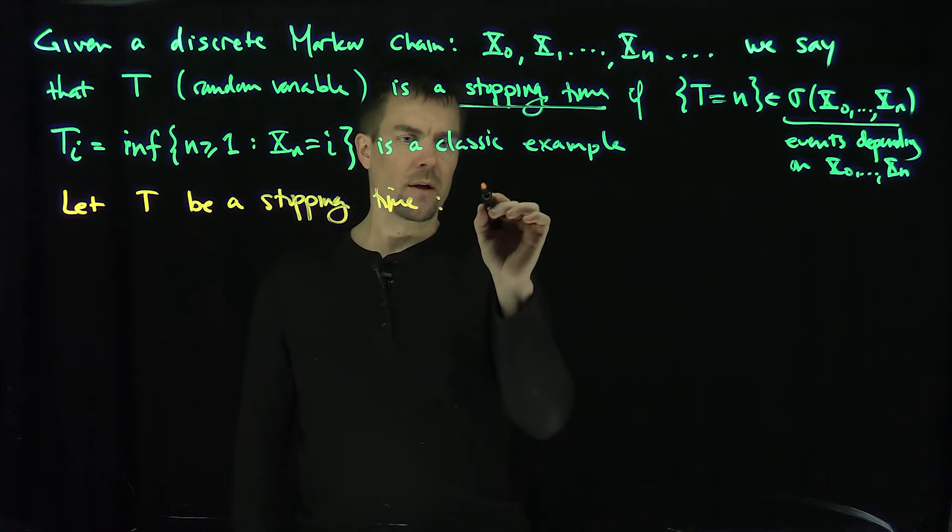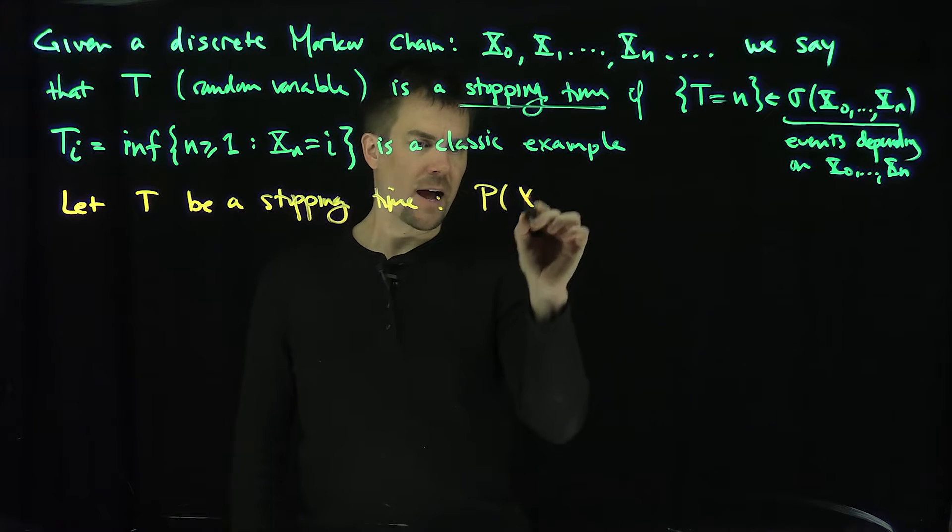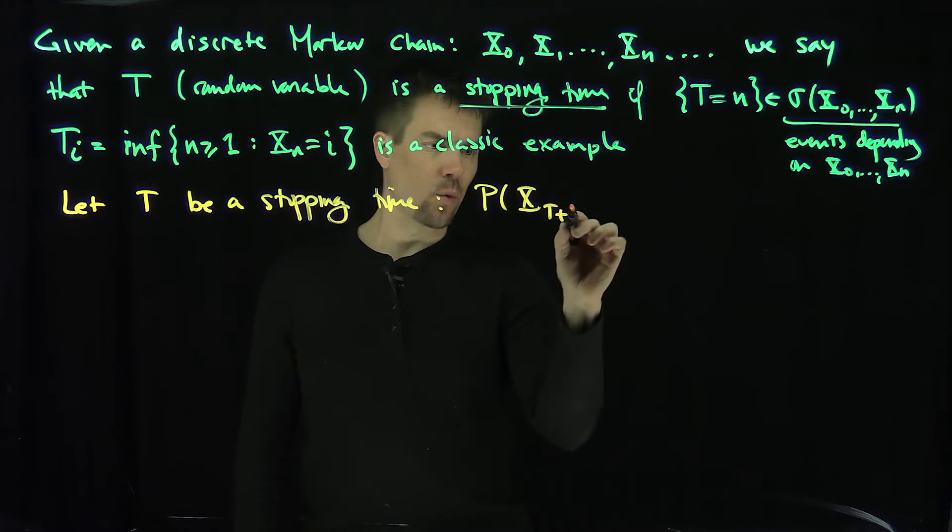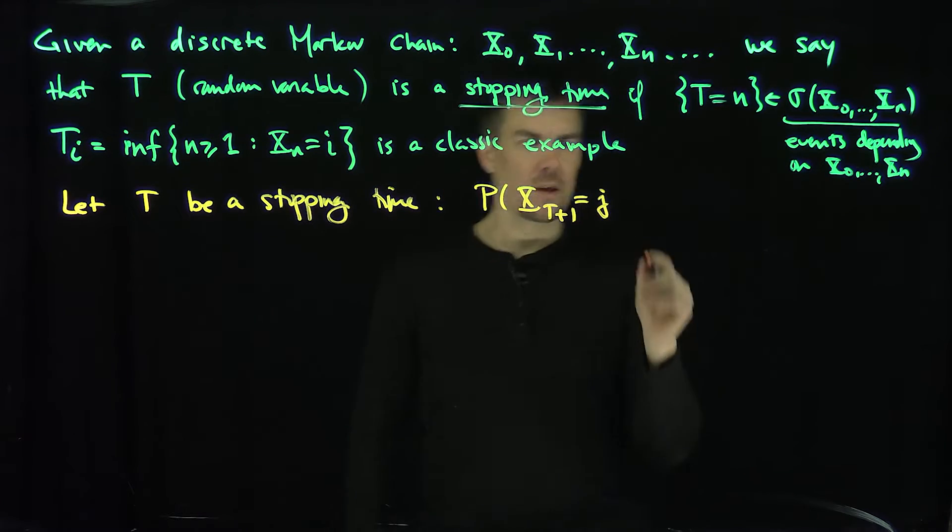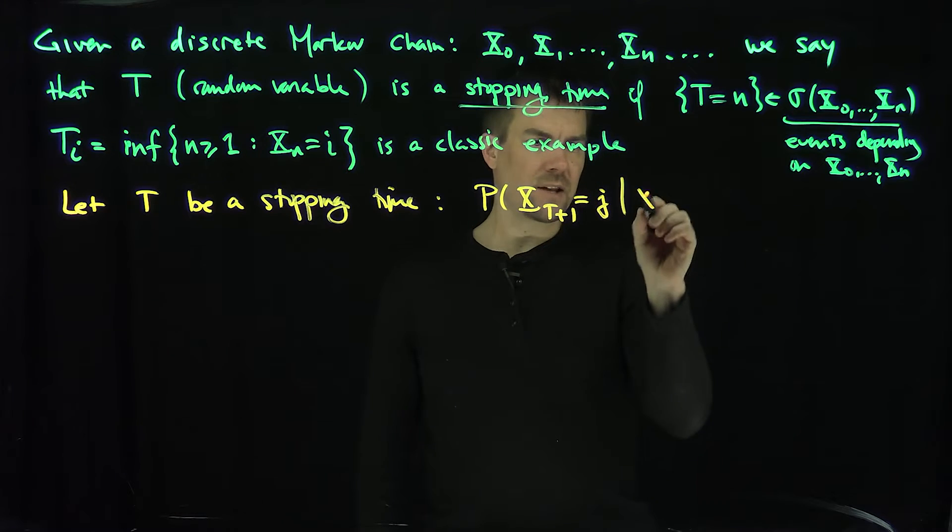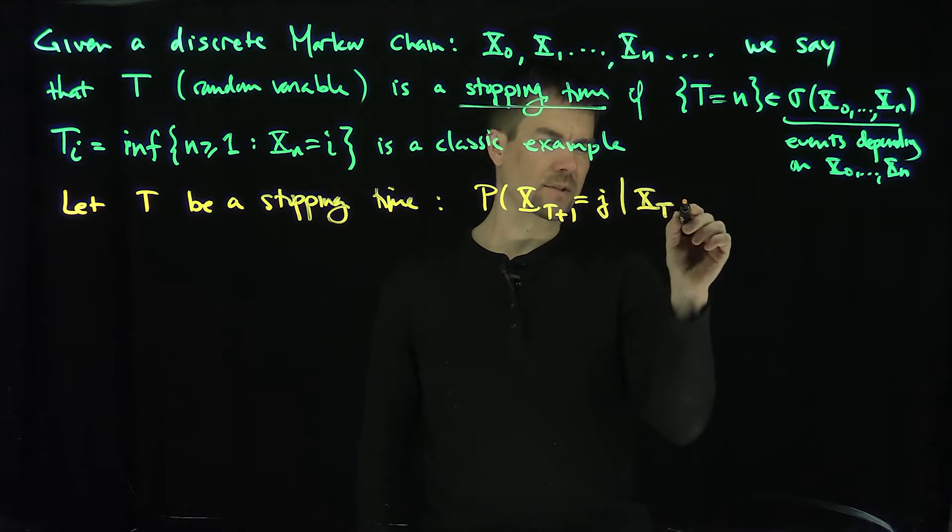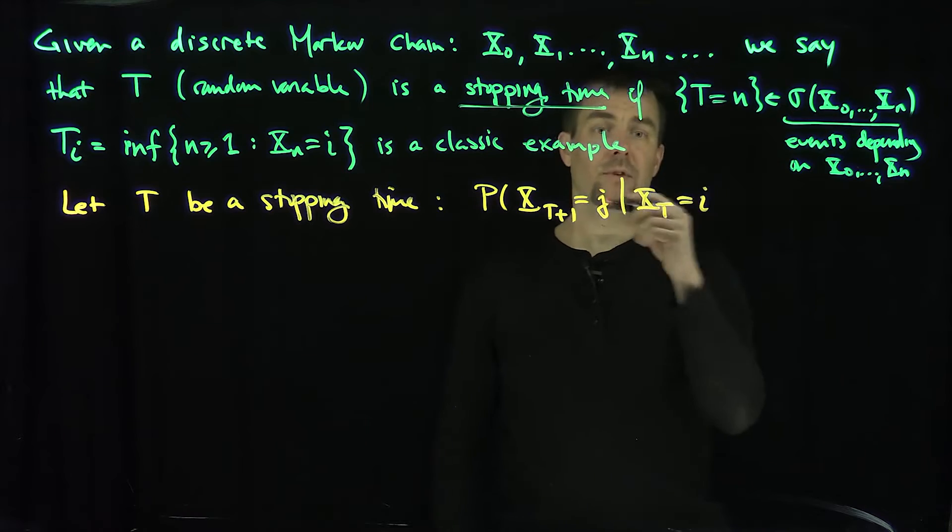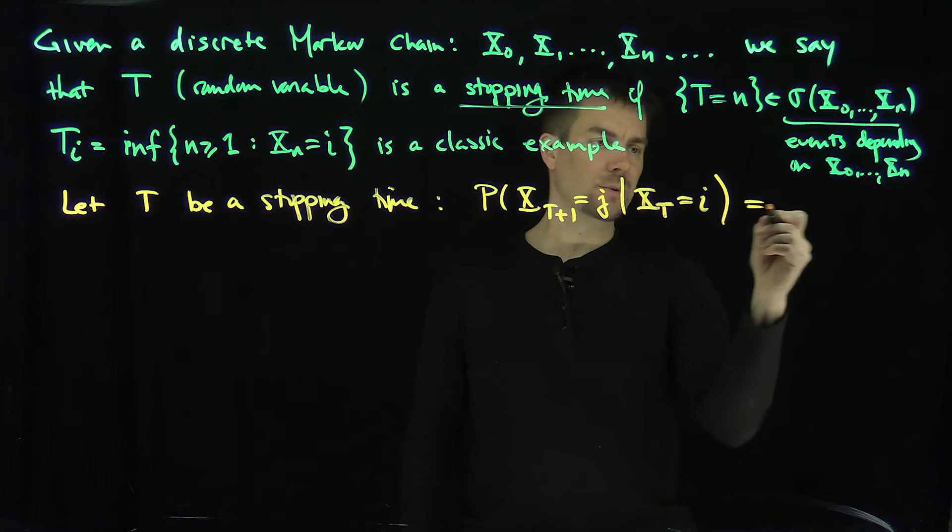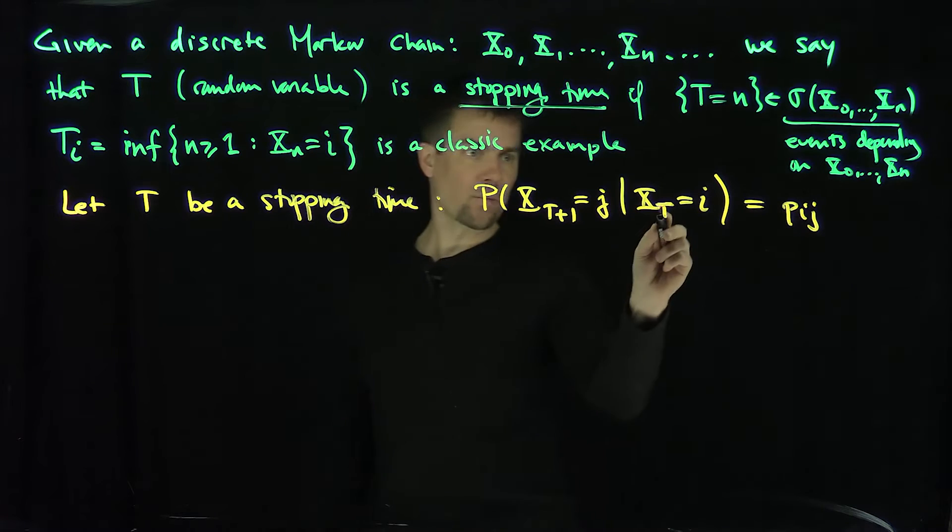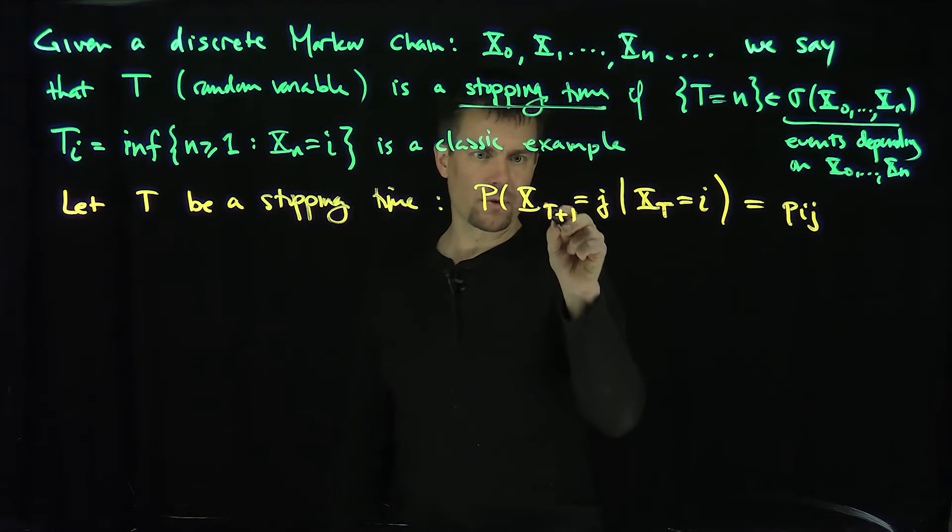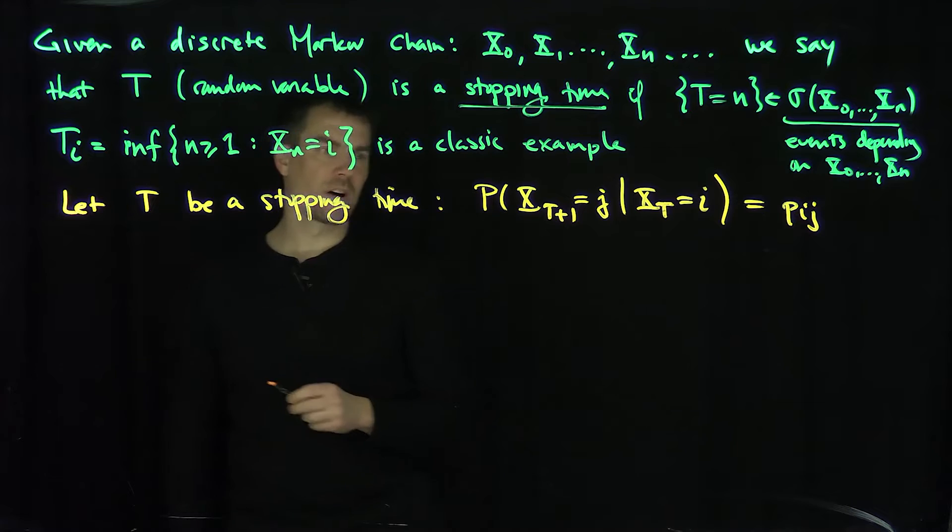Our goal is to prove the probability that x_T plus 1 is equal to j, given that x_T, for stopping time, is equal to i, is really, for a time homogeneous Markov chain, I can show this is just p going from i to j. In other words, it doesn't matter, even though that's a random variable, that's a random time that I'm doing these things at. That's the strong Markov property.